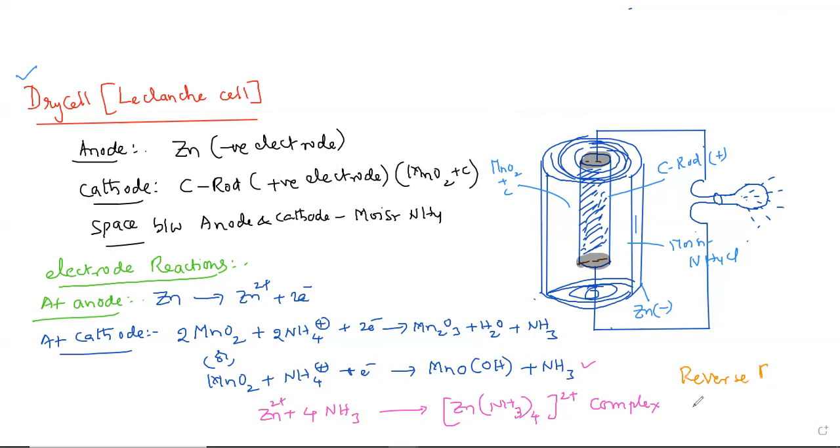Reverse reaction cannot occur in this dry cell. That is why dry cell is also known as the primary cell. What is primary battery means? The primary battery cannot be recharged. That's why this dry cell has got disadvantage compared to the other lead acid battery we discussed in the previous session.